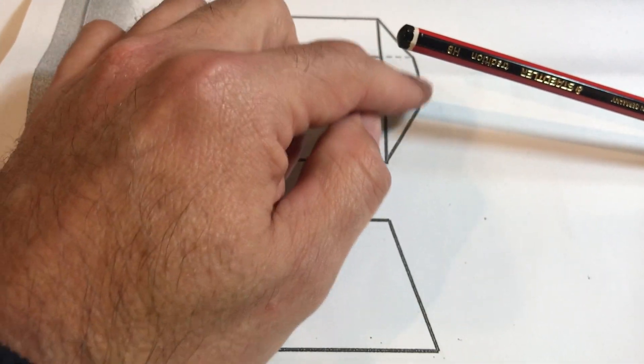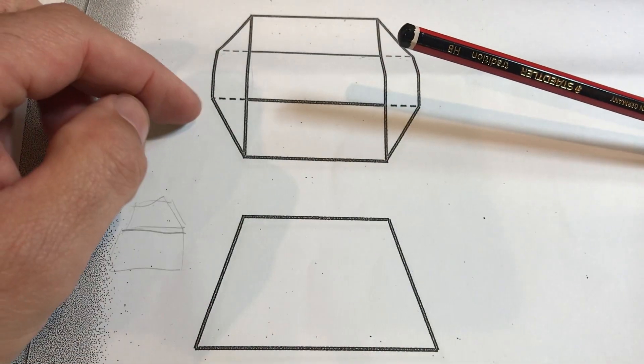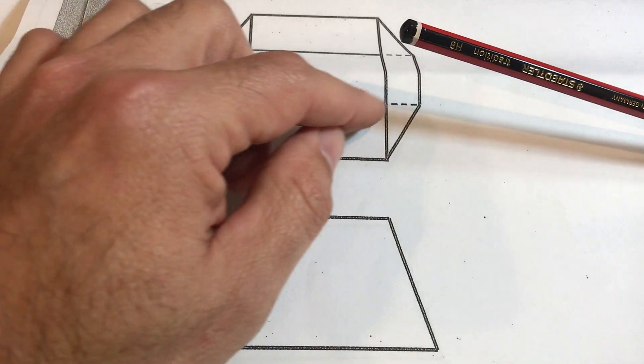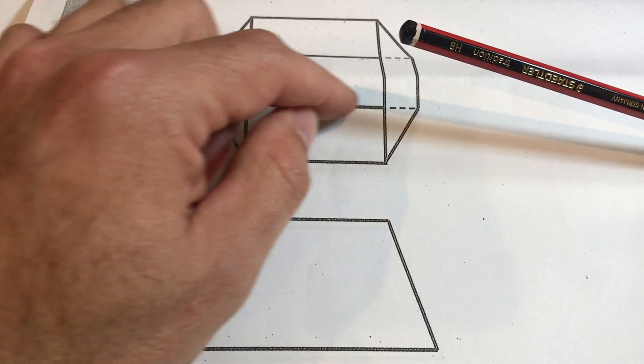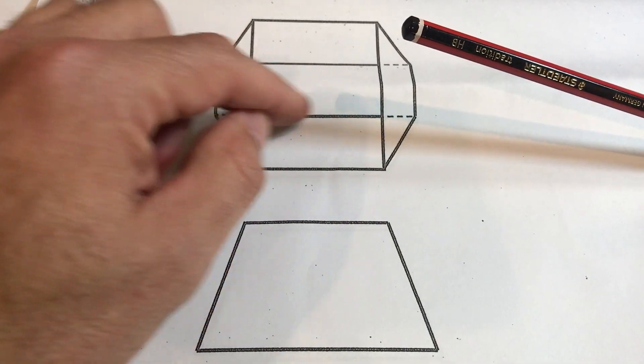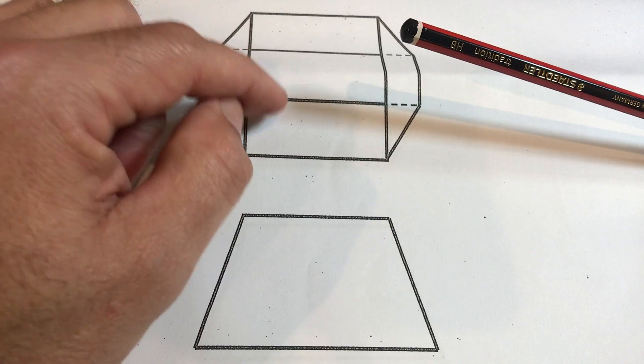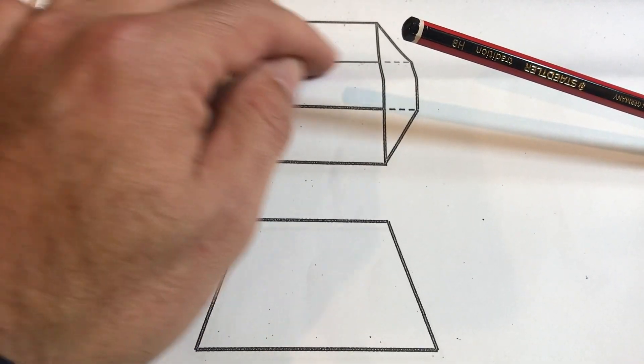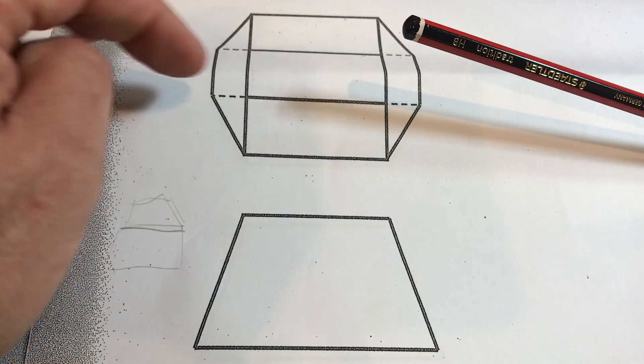So anything that's obscured becomes a dotted line. So for a while there I was thinking that all of these lines were supposed to be dotted, but you see that as a solid line because that's your base that you're looking down into and you can see the bottom, you can see where both of these sides meet with the bottom of this hopper.